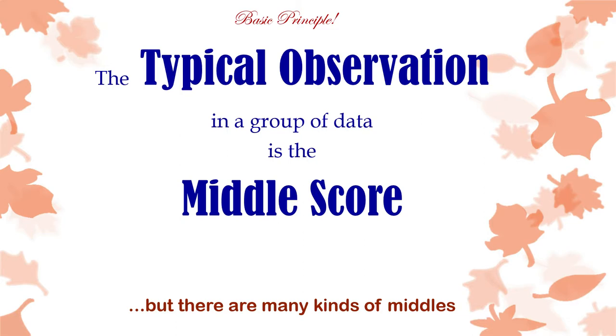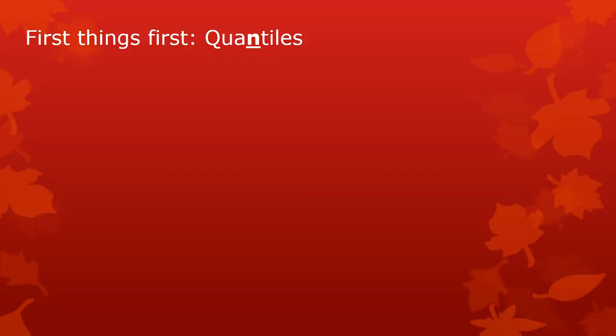Back to the basic principle, the typical observation is a middle score. The median is one kind of middle score. We might say it's an average. Some people say the average is just the mean but other people will say the mean, the median, and the mode, those are all just different kinds of averages. These center things all serve the same function. They tell us a typical score from our data.